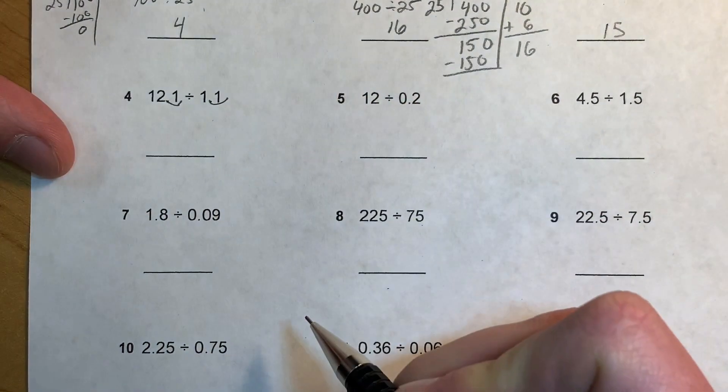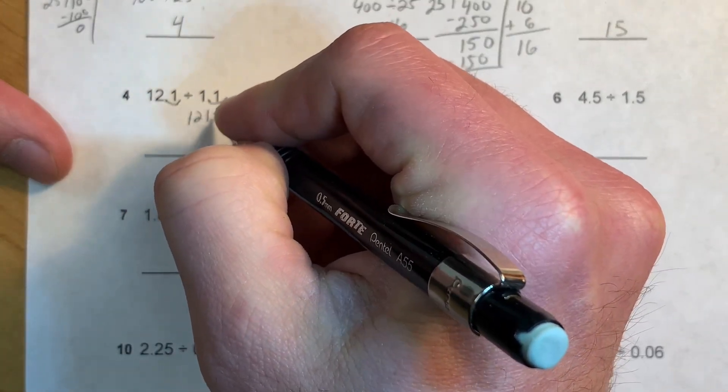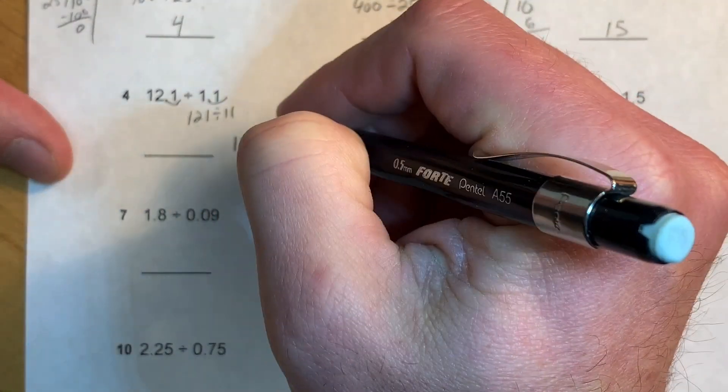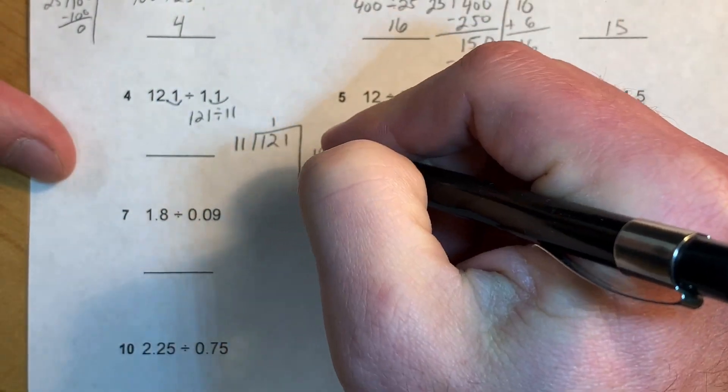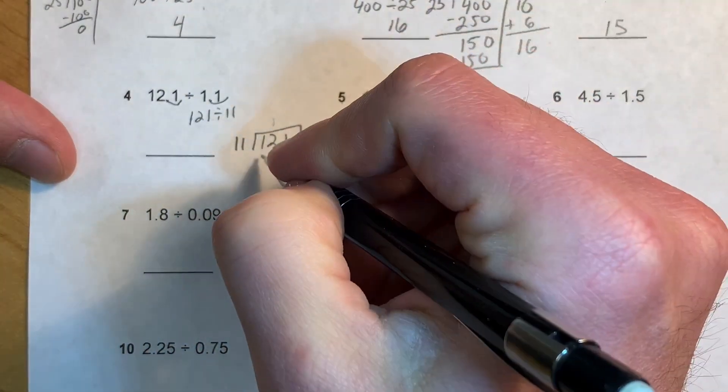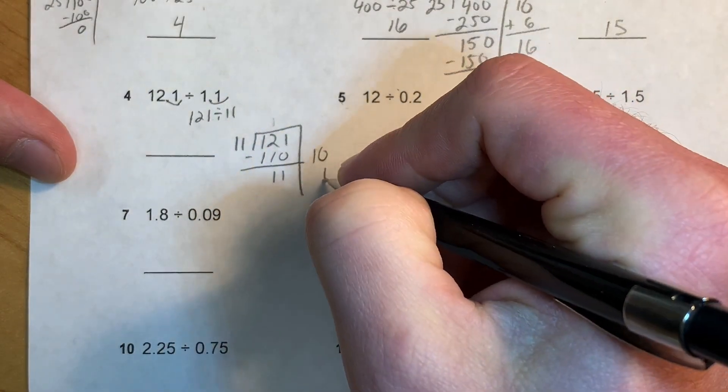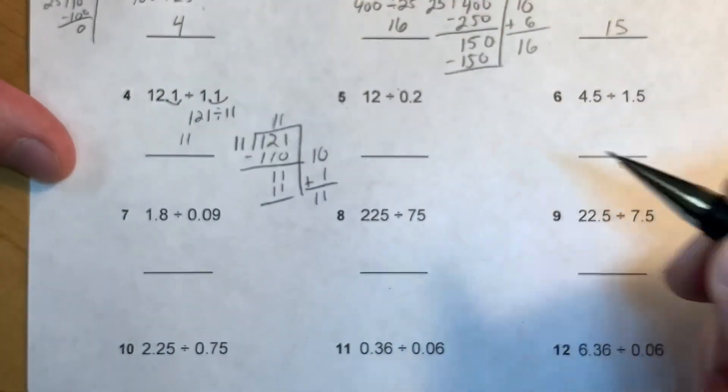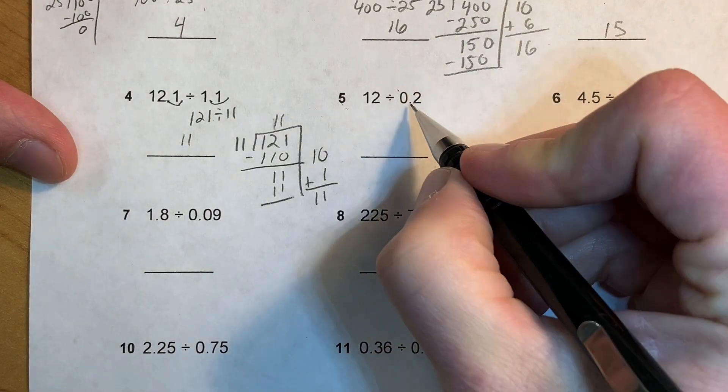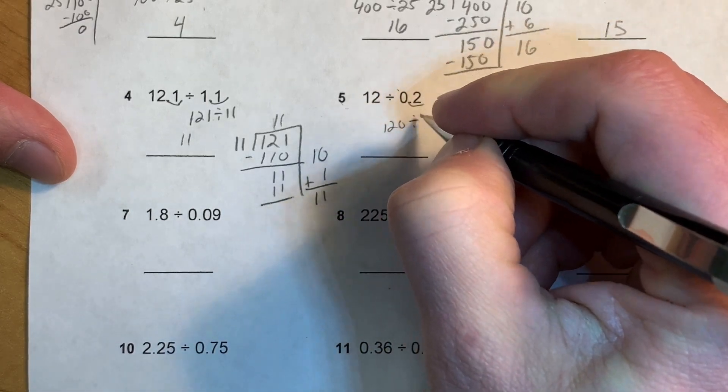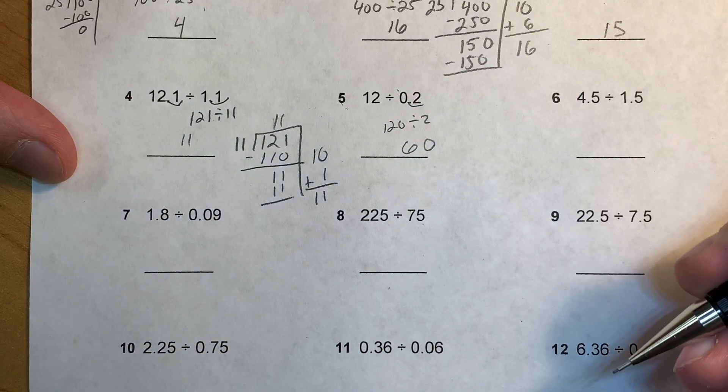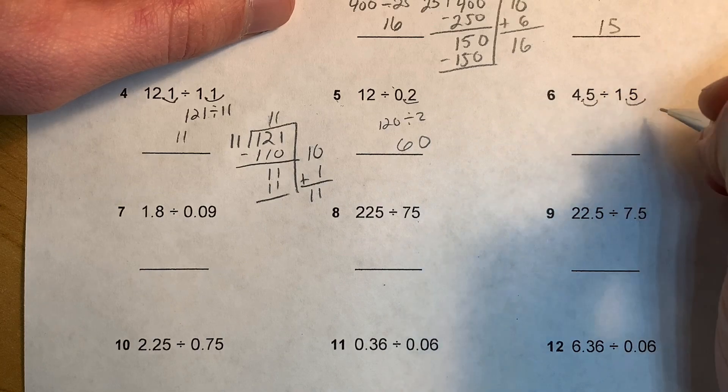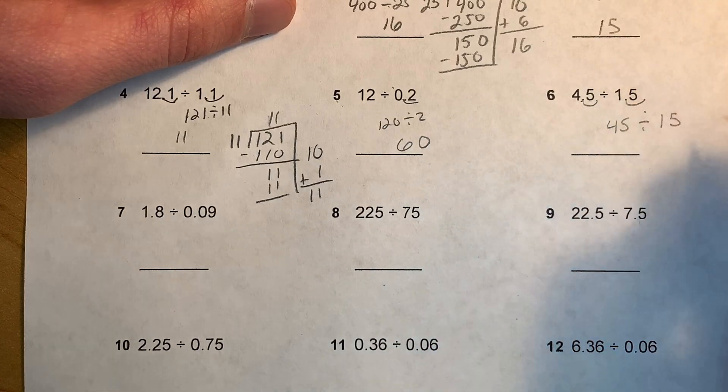Or you could do it the long way as well. Over here we're going to multiply by 10 on these since they're tenths, so I have 121 divided by 11. We can do partial quotient. I can make that, multiply that by 10, and I can take one more group of 11, then I can add those together so I have 11. This one I'm going to multiply by 10, so 120 divided by 2, that's going to give you 60. Then I'm going to multiply by 10 again, 45 divided by 15, that's going to give you 3.